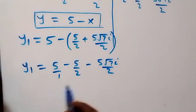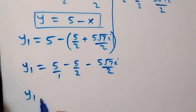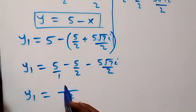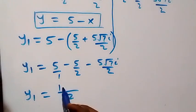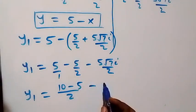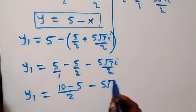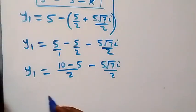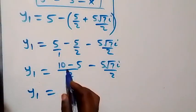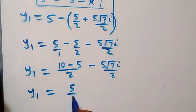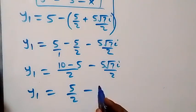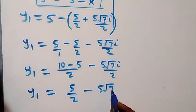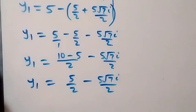Bringing these fractions together — five equals ten over two — so y₁ equals ten over two minus five over two minus five root seven i over two, which gives y₁ equals five over two minus five root seven i over two.